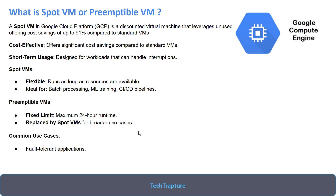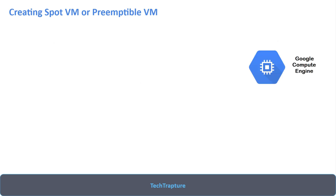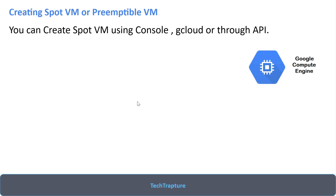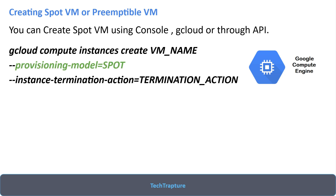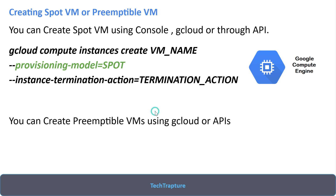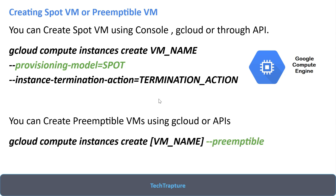Common use cases include fault-tolerant applications, high-throughput batch jobs, and big data analytics. A Spot VM can be created using the console, gcloud command, or through the API. The gcloud command requires the option provisioning-model=SPOT along with a termination action. For preemptable VMs, creation via console is no longer supported since they are replaced by Spot VMs, but you can still use a gcloud command to create a preemptable VM.